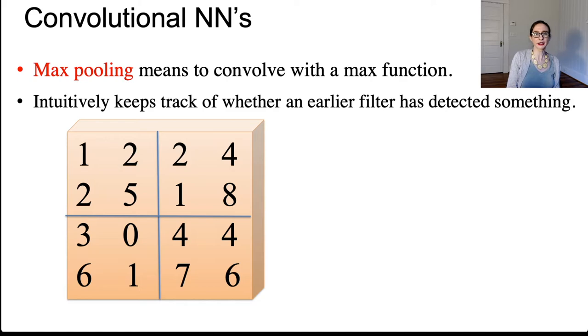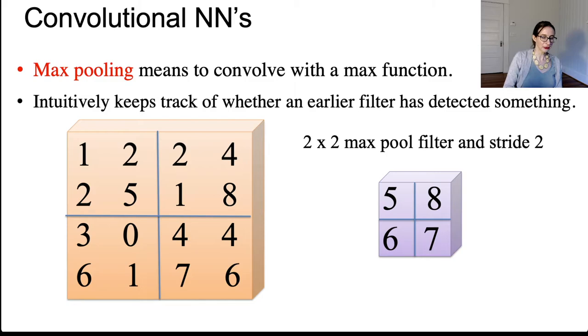So let's say we ran our vertical edge filter from the previous slides across the image, and there was a vertical edge, and it happened to be in kind of the middle right, where there's that 8 there. You see that 8? So that's where the vertical edge was in the image. And so there's a very large number in that particular layer. So when you run a max pool, this is a 2 by 2 max pool filter with a stride of 2. And so here it's coming up with the max in each of these four squares.